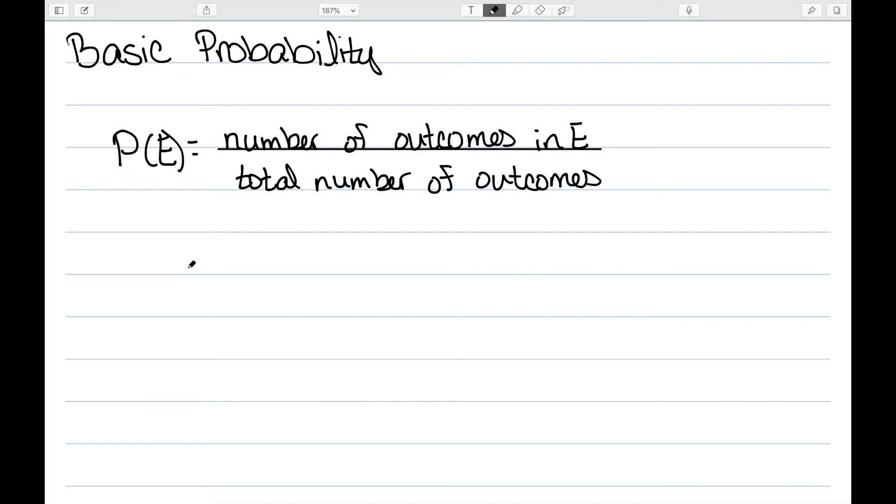In this video, I want to talk about some basic probability. If we want to find the probability of an event E occurring, we denote it by P of E. It's equal to the number of outcomes in my event divided by the total number of outcomes in the sample space.